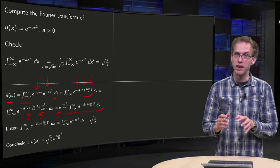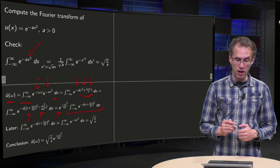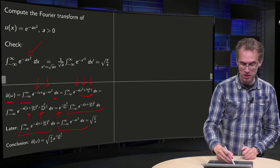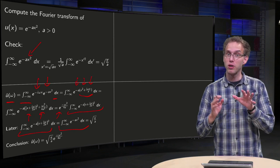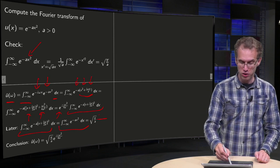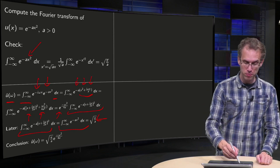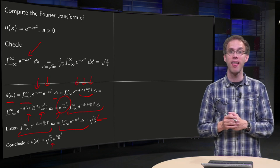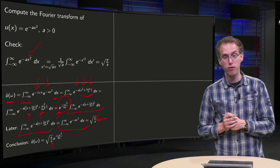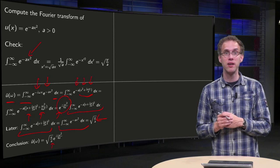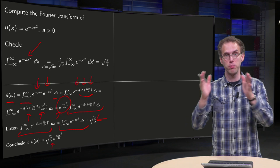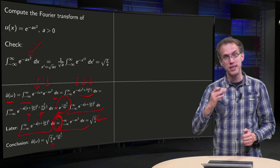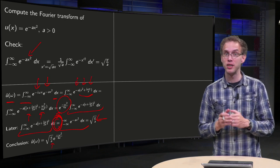Now you see that this integral is very similar to the original one. In the next couple of slides we will show that this integral with minus a(x + iω/2a)² is in fact the same as the integral from minus infinity to infinity of e^(-ax²). This will require some work, but once we have shown that, we know that the answer equals √(π/a), so then we have û(ω) = √(π/a) · e^(-ω²/4a), so û(ω) is again a Gaussian — a very broad Gaussian becomes a very narrow one. This equality follows from a straightforward application of the theorem of residues, as we will see in the remainder of this video.